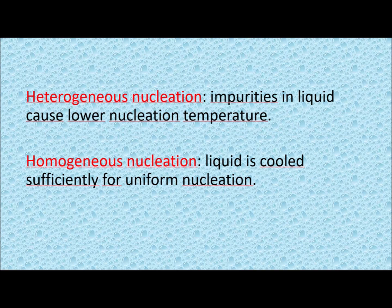Depending on the liquid, it needs to be cooled down a certain amount further. For example, homogeneous nucleation of water occurs with a chance of 99.9% at about minus 35 to minus 43 degrees Celsius, depending on the size of the water droplet. But it has a very low chance of freezing at minus 10 degrees Celsius. But if water is not pure, it can, with a high probability, also nucleate at minus 10 degrees Celsius.